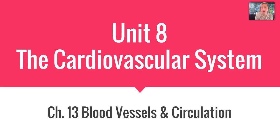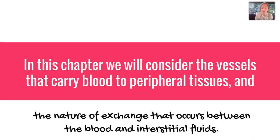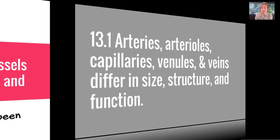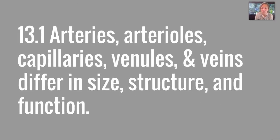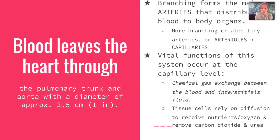Hey guys, Carlson back to finish up Unit 8 with you, which covers Chapter 13, the blood vessels and circulation. Some of this information will be reviewed, but we're going to get into much more detail about the vessels that carry blood to our peripheral tissues. We're also going to talk more about the nature of exchange that occurs between the blood and interstitial fluids. We'll start with section 1, which covers the different types of vessels and how they differ in size, structure, and function.